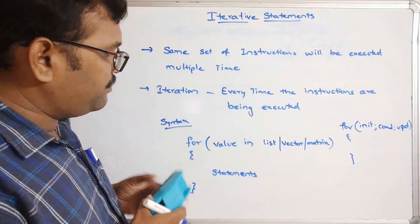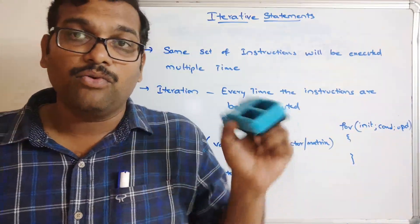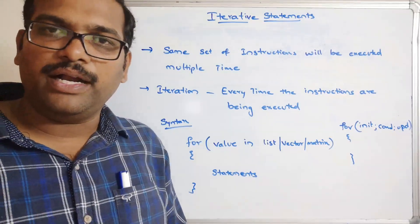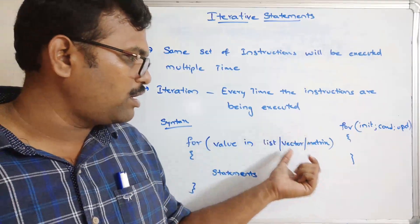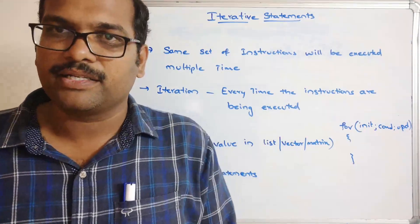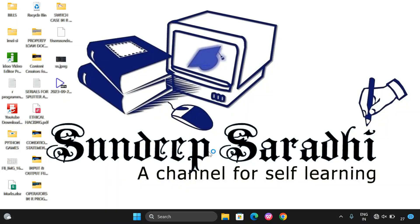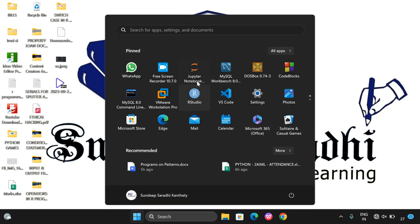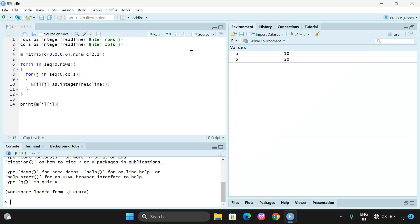These are the syntaxes for implementing the for loop using a sequence or data structures. Now let us move on to R Studio and demonstrate each case: implementing with a sequence, implementing with a vector, implementing with a list, and implementing with a matrix.